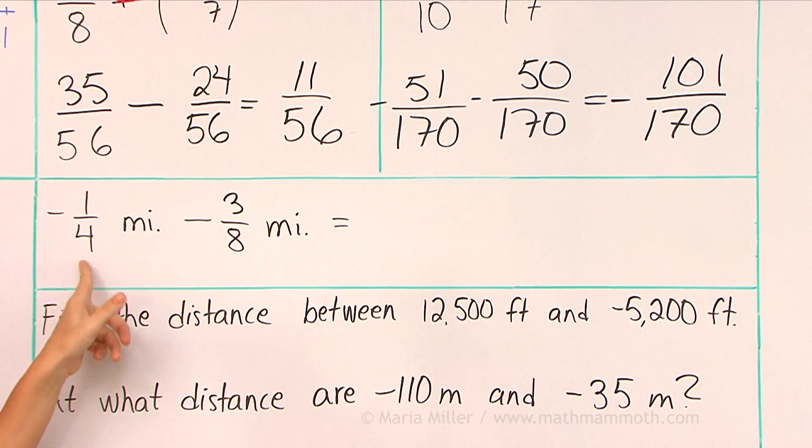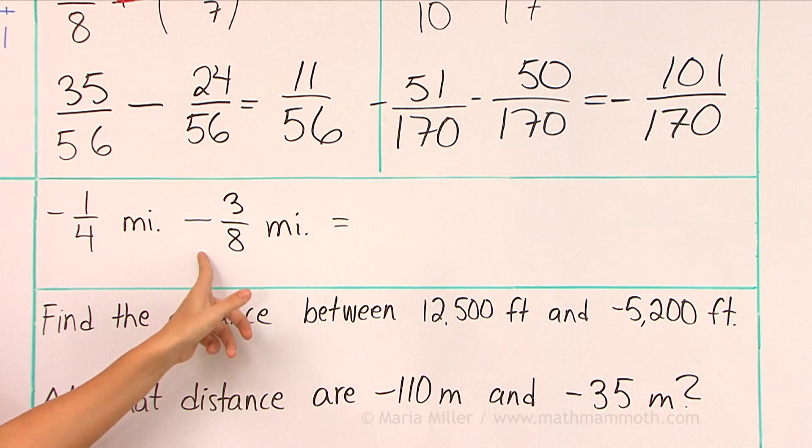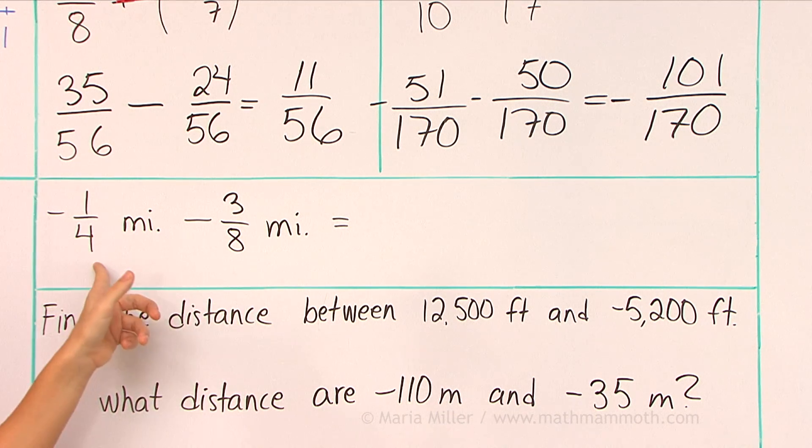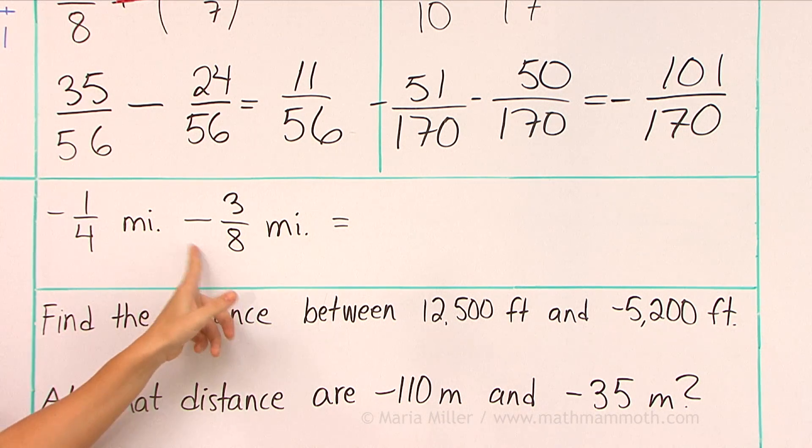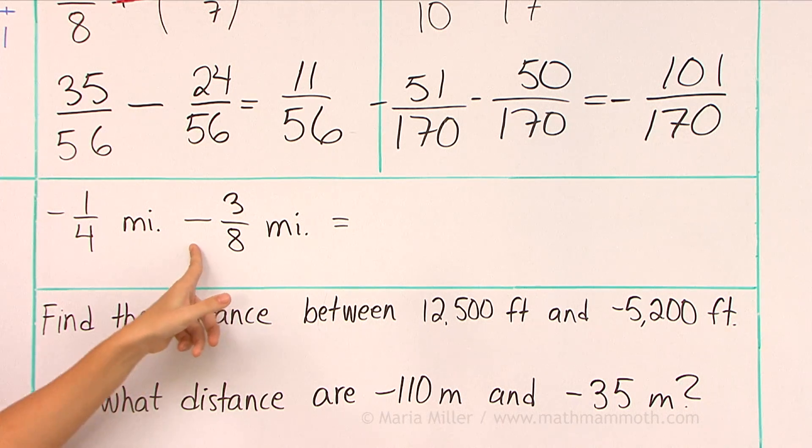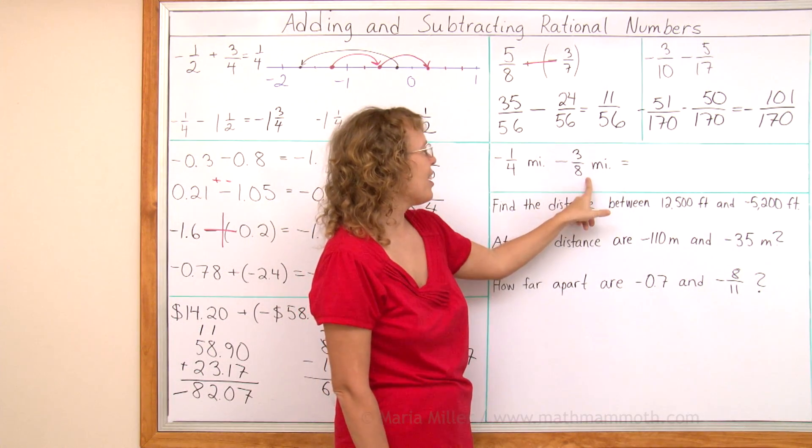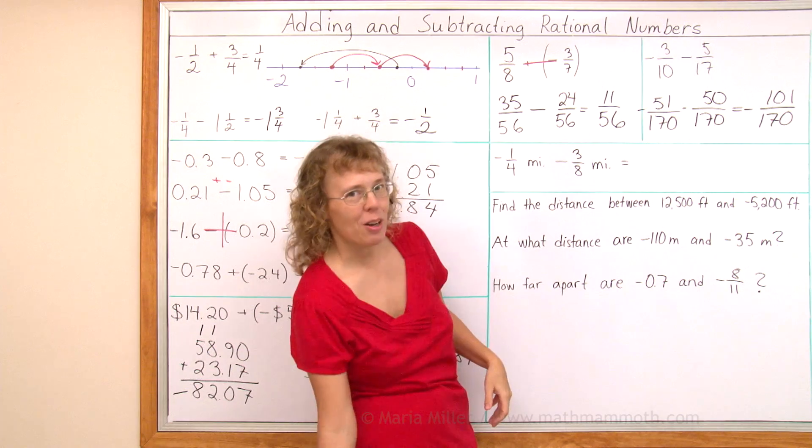I'll tell you my idea. And that is, if you think of elevation, and then you think of depth of an ocean, this negative one-fourth of a mile would be a depth. It would be one-fourth of a mile below the surface of the sea. And then this means that, let's say we have a submarine at that depth. And then that means that the submarine goes lower, three-eighths of a mile more down.